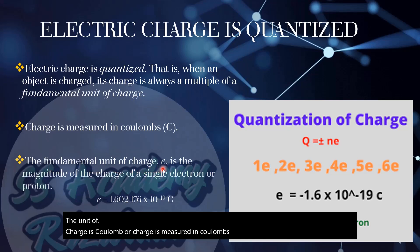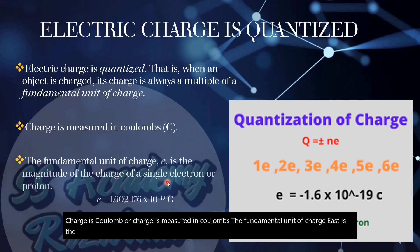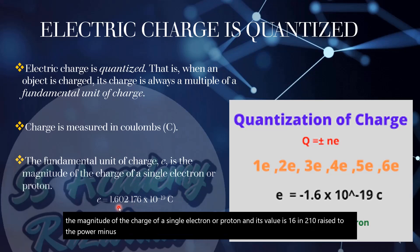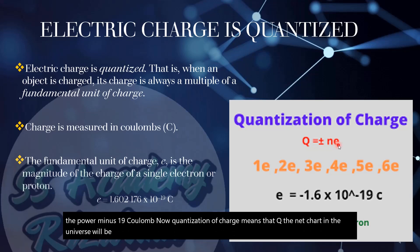The fundamental unit of charge, e, is the magnitude of the charge of a single electron or proton, and its value is 1.6 × 10⁻¹⁹ coulomb. Quantization of charge means that Q, the net charge, is equal to ne, where n is an integer.